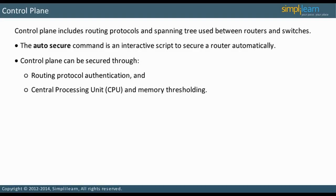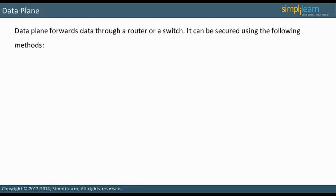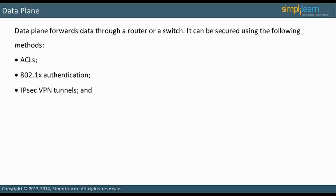In the next slide, let us discuss Data Plane. Data Plane forwards data through a router or a switch. It can be secured through ACLs, 802.1X authentication, IPsec VPN tunnels, and unicast reverse path forwarding. In the next slide, let us discuss Control Plane Policing.